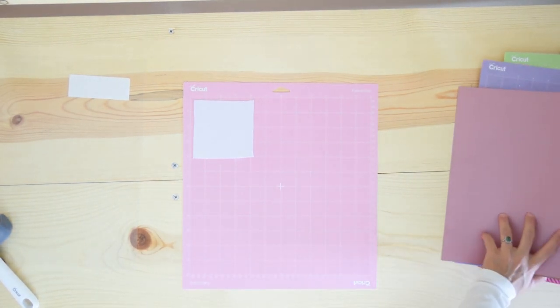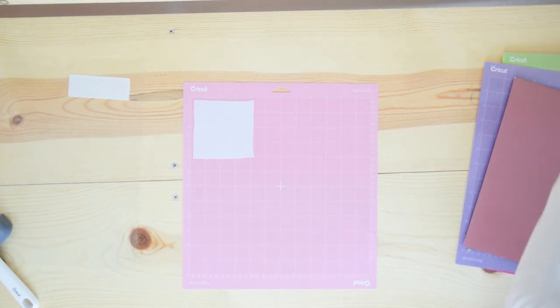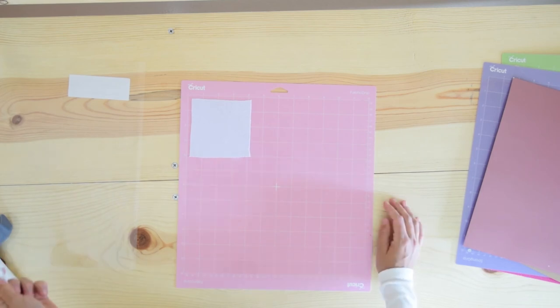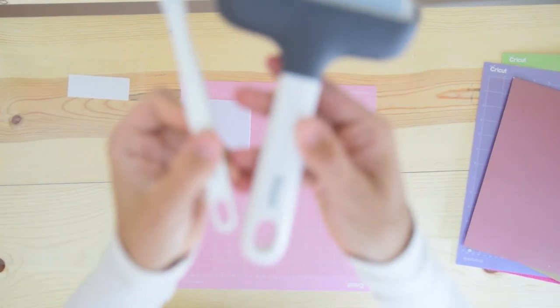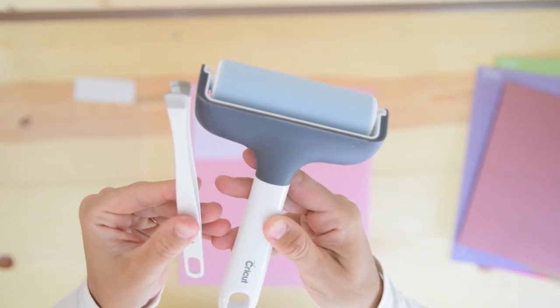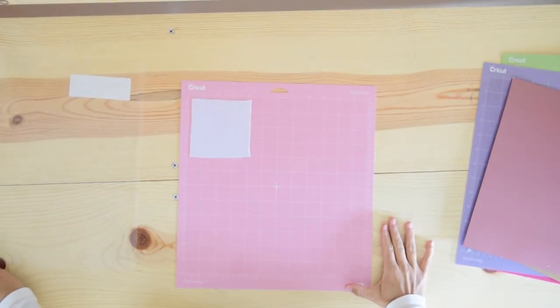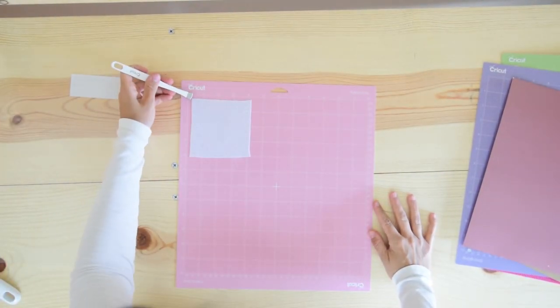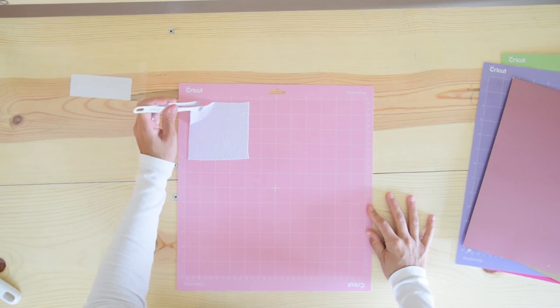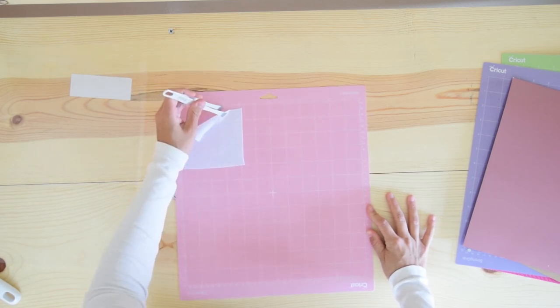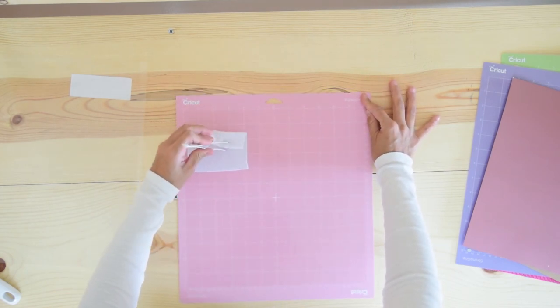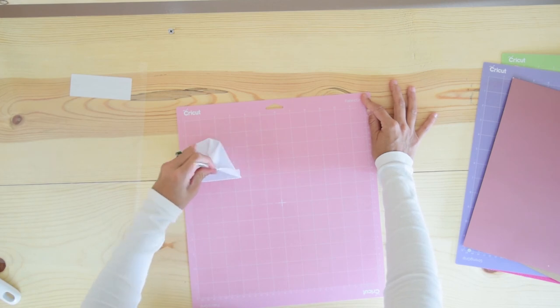Now, when you're gonna remove something from the fabric grip mat, unlike other mats that you bend, I really recommend you to get these little tools. They come together actually. This will help you to remove the fabric from the mat like this. So you just lift it up like that. And since it's fabric, you really don't have a problem with it, it just becomes really easy. I try to avoid touching it and all of that, just to extend the life of the mat.